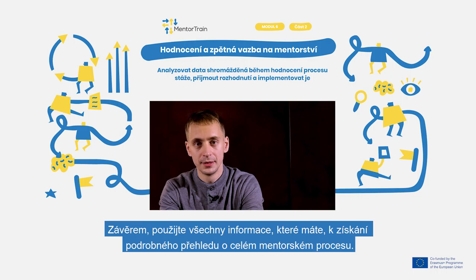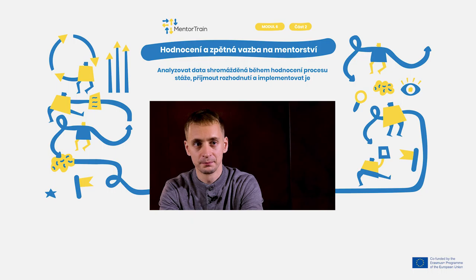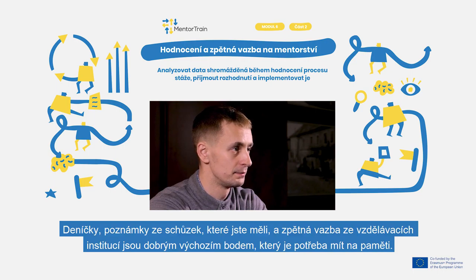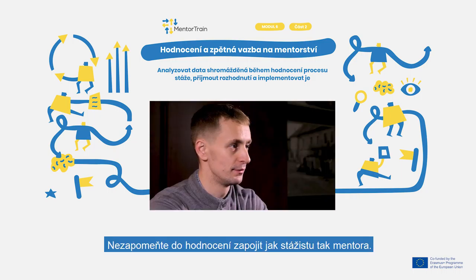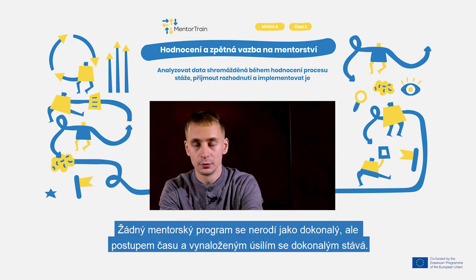In conclusion, use all the information you have to get a detailed overview of the whole mentoring process. Diaries, notes from any meetings you had, and feedback from educational institutions are good starting points to keep in mind. Make sure you involve both the apprentice and mentor in the evaluation. No mentoring program starts out perfect, but with time and effort you will get there.